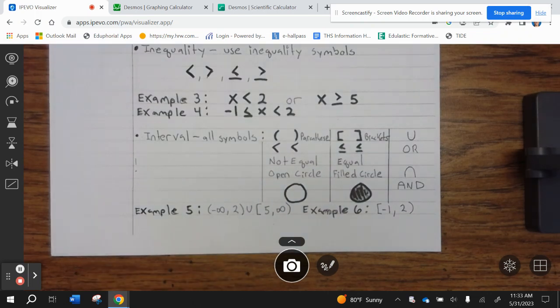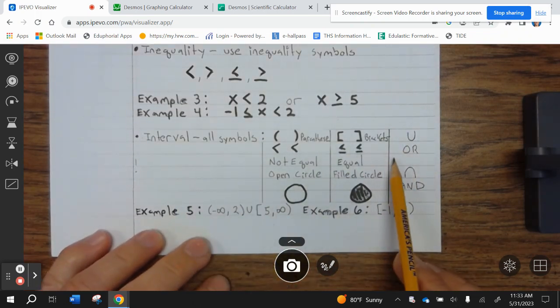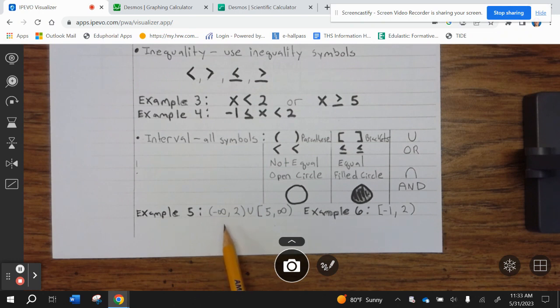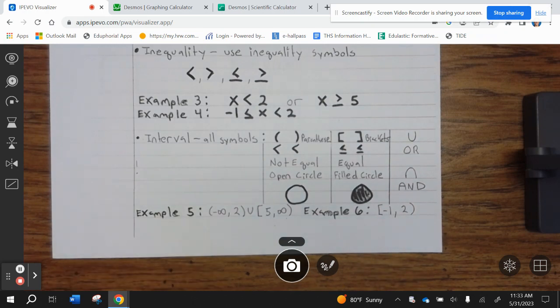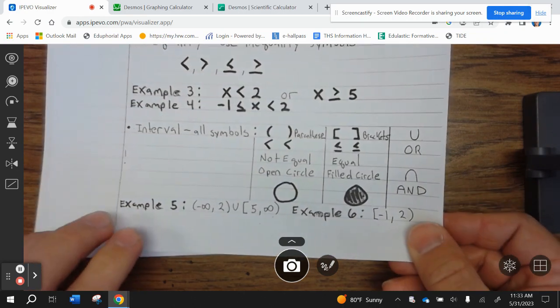All right, go ahead and write down the symbols here. Then you look at example 5, you have negative infinity to 2 or 5 to infinity. Example 6 is negative 1 to 2, not including 2. All right, go ahead and finish writing that up, and let's take a look at the first example.